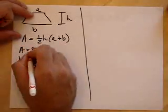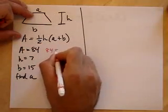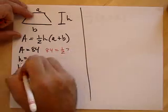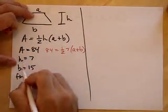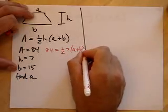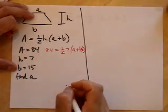Watch. I have to put 84 in for A. One half. h is 7. And I have a plus b. Sorry, a plus 15. So how would I solve for this?